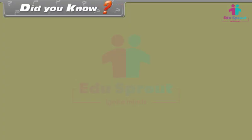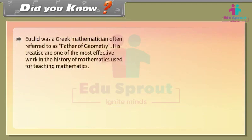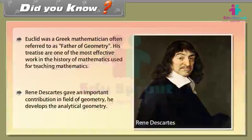Did you know? Euclid was a Greek mathematician often referred to as the father of geometry. His work is one of the most effective in the history of mathematics, used for teaching mathematics. René Descartes gave an important contribution in the field of geometry — he developed analytical geometry.